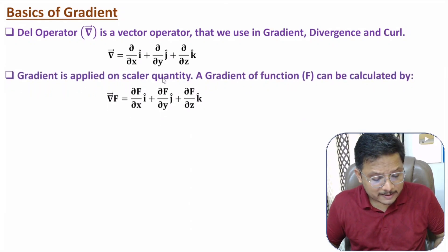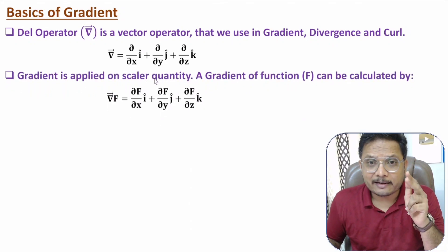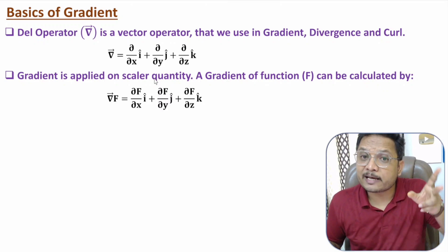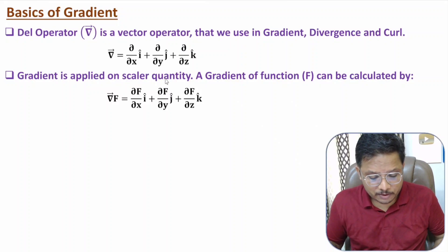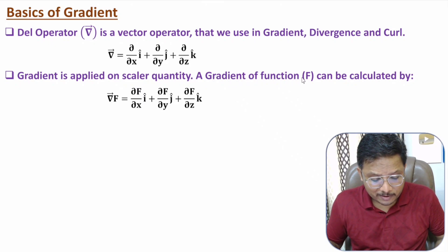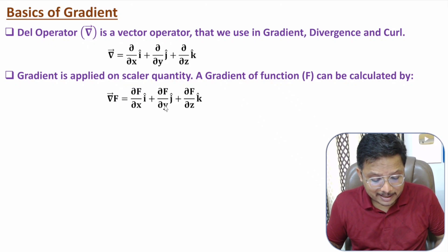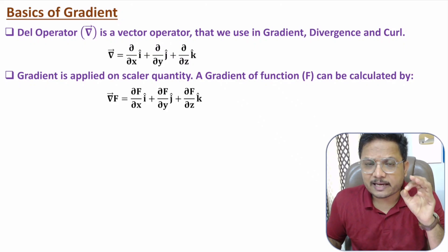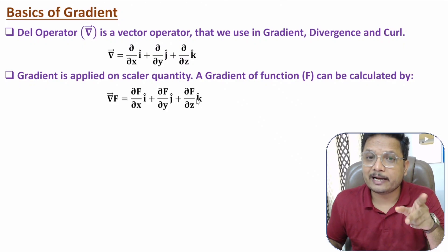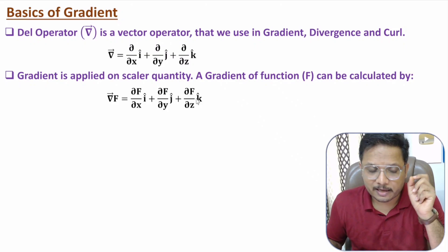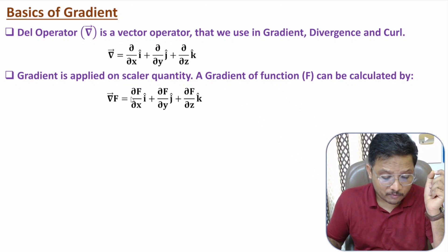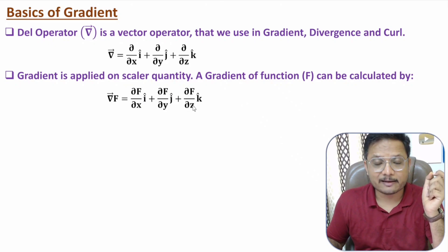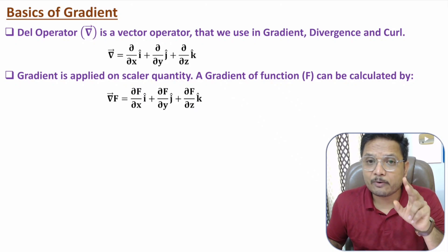Gradient is applied on a scalar quantity — always remember this. After gradient, we will have a vector quantity. So you will have a scalar function on which we can apply gradient. Gradient of function F, that is del F, equals del F/delX in the I direction, plus del F/delY in the J direction, plus del F/delZ in the K direction.